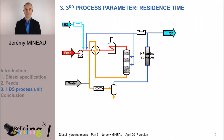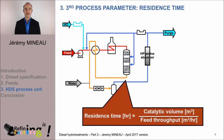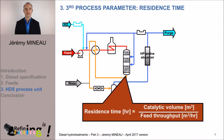The third important parameter is the residence time of the feed in the reactor. This residence time is defined by the ratio of catalytic volume divided by the feed volumetric flow rate at ambient temperature. Once in operation, the quantity of catalyst is set by the reactor volume, but the feed throughput still remains an operating parameter. The higher the residence time, the longer the time the diesel material stays in contact with the catalyst, and the better the desulphurization.